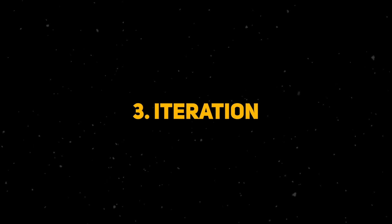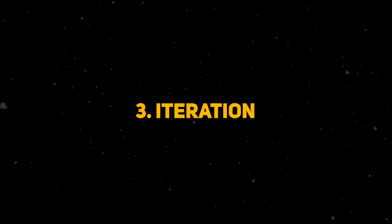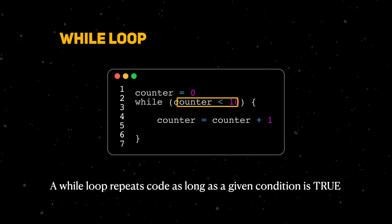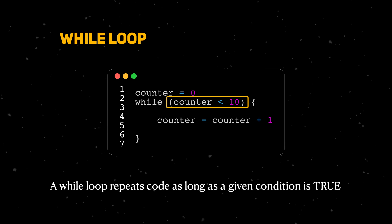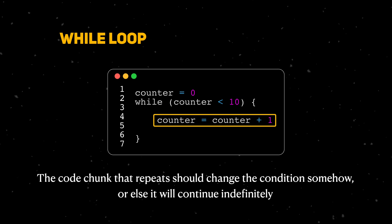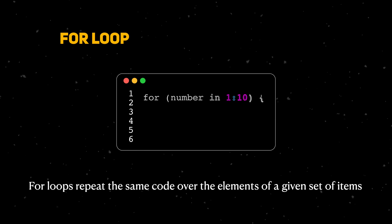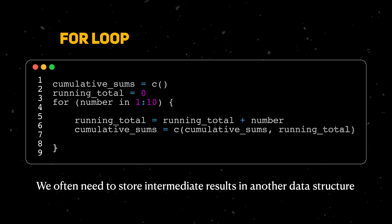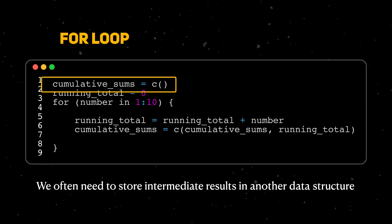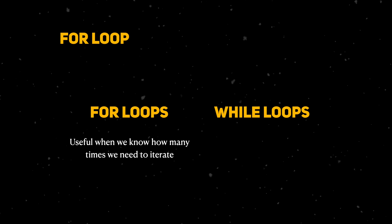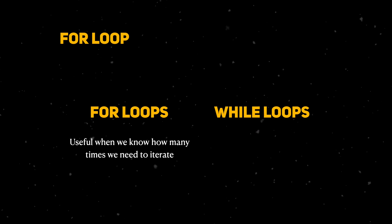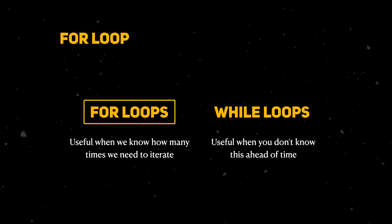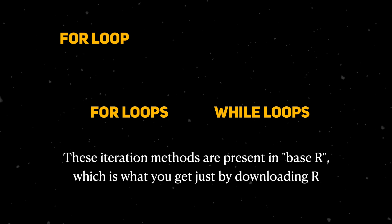One of programming's greatest strengths is that we can perform repetitive tasks quickly through iteration. R provides two ways to perform iteration: for loops and while loops. A while loop will perform the same chunk of code as long as the condition of the loop is true — you need a way to change this condition within the brackets or else the loop will run indefinitely. The for loop will perform the same chunk of code for all the elements of a given set. For loops are useful when you know exactly how many times to repeat yourself; while loops are better when you don't, such as in an optimization task.